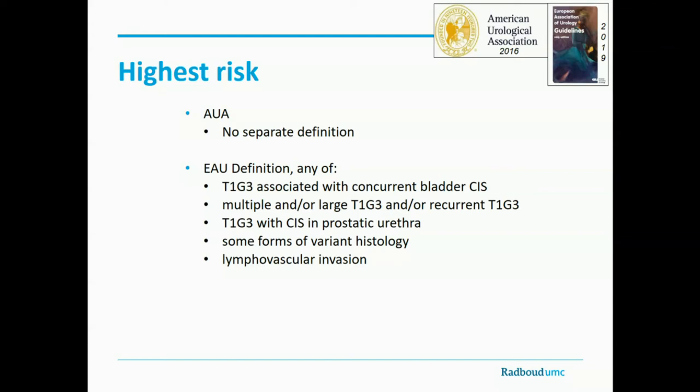The EAU has a very high risk group not defined separately by the AUA but sitting within their high-risk category: T1 G3 associated with carcinoma in situ, multiple large T1 G3 or high-grade with recurrent T1 high-grade, CIS of the prostatic urethra, some forms of variant histology, and lymphovascular invasion — which has been shown repeatedly at this meeting to be a very bad prognostic sign even in non-muscle invasive bladder cancer.